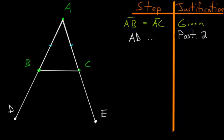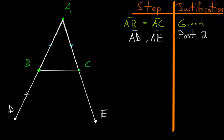We label the extended points D and E, so with Postulate 2 we have that AD and AE are drawn. The goal of this proof is to show that angle ABC equals angle ACB, and also that angle DBC equals angle ECB. The first step is to pick a point at random on line AD and call it F.